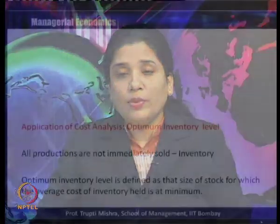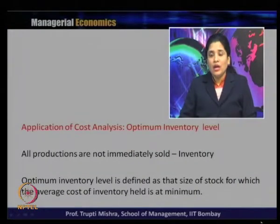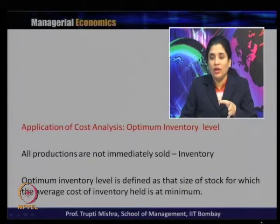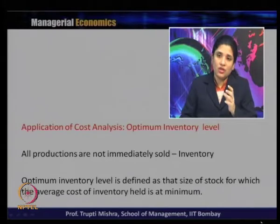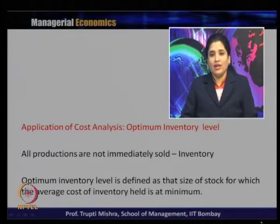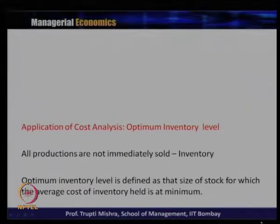Next we discuss the optimum inventory level. Inventory arises when all production is not immediately sold; the gap between what is produced and what is sold goes to the warehouse, which in economics is called inventory. The optimum inventory level is defined as the size of stock for which the average cost of inventory is minimum — analogous to the optimum output level, but here it is the level of stock where average inventory cost is minimized.